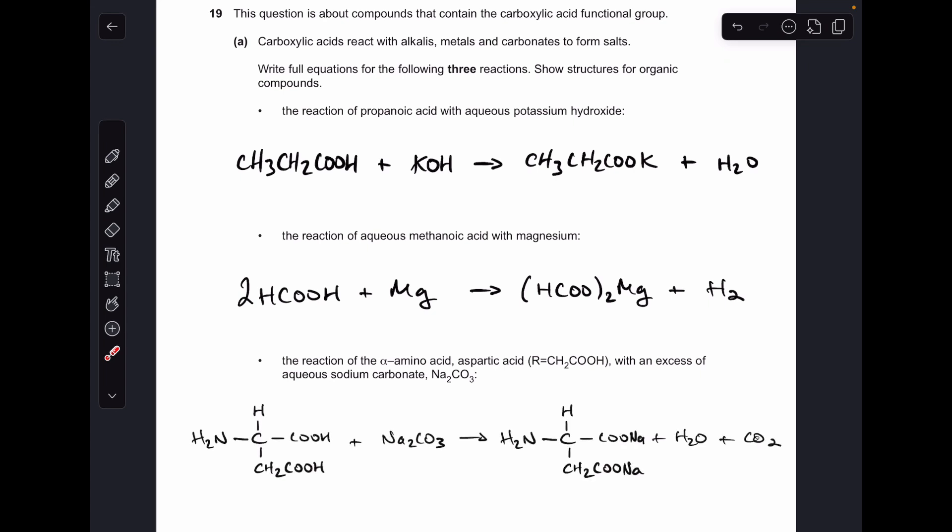And there's the third one. You'll see we've got two carboxyl groups, one in the R group and one as part of the amino acid functional group. So they're both going to react with sodium carbonate and form the sodium salt, and we also get water and CO2 for that one.